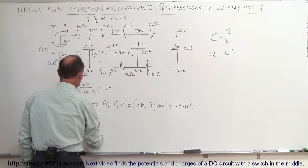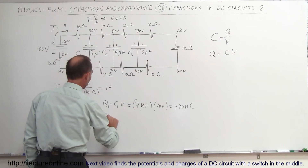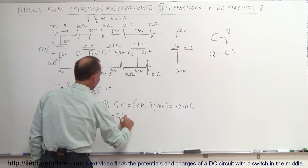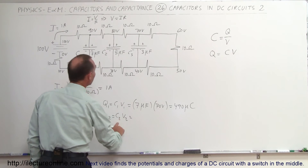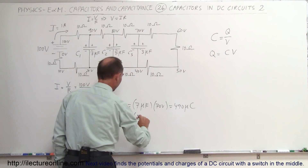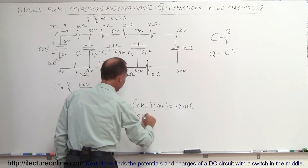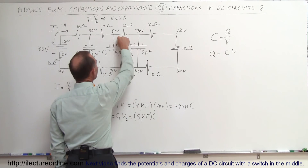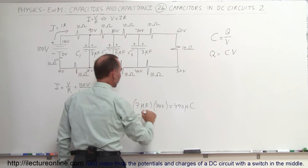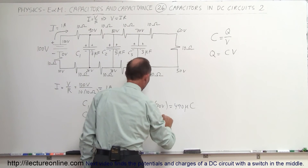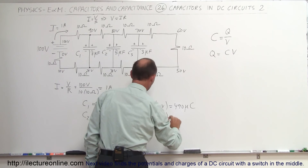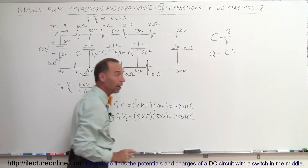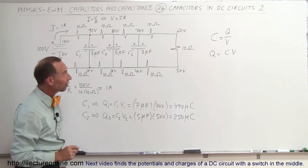On C2, Q2 is equal to C2 times V2. The capacitance is 5 microfarads, and the voltage difference is 80 minus 30, which is 50 volts. That means there will be 250 microcoulombs of charge on the second capacitor.